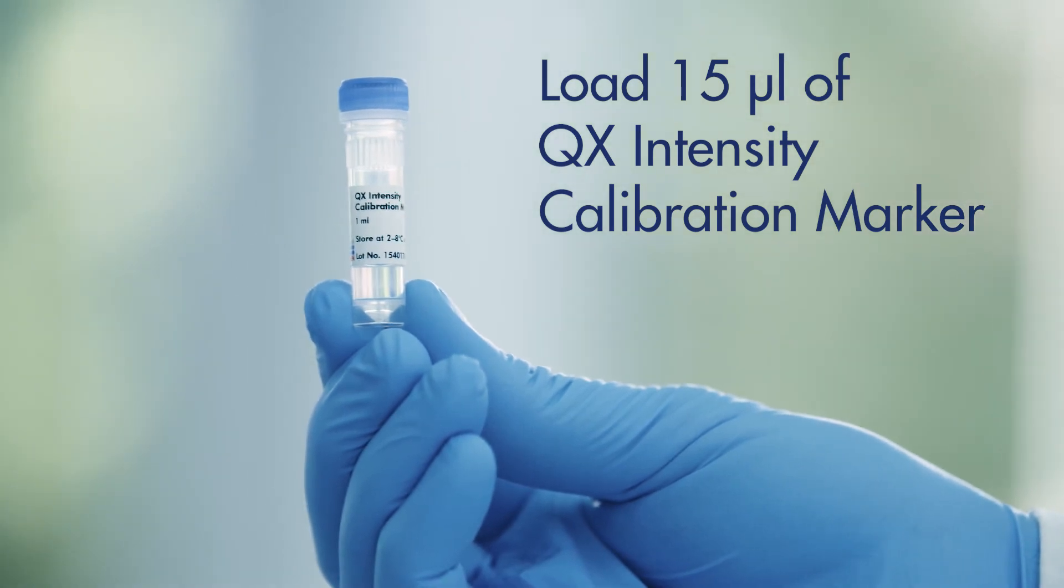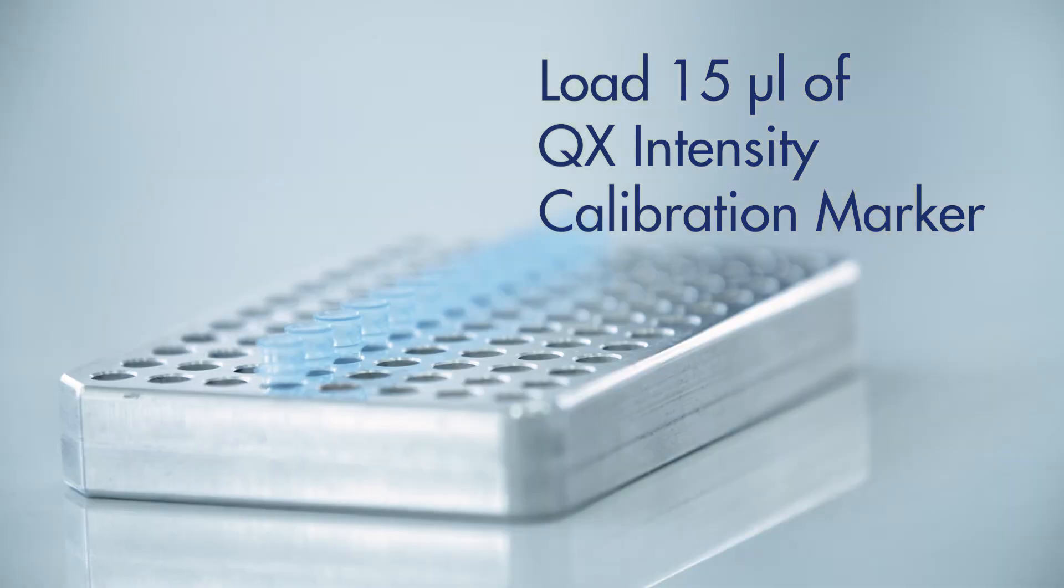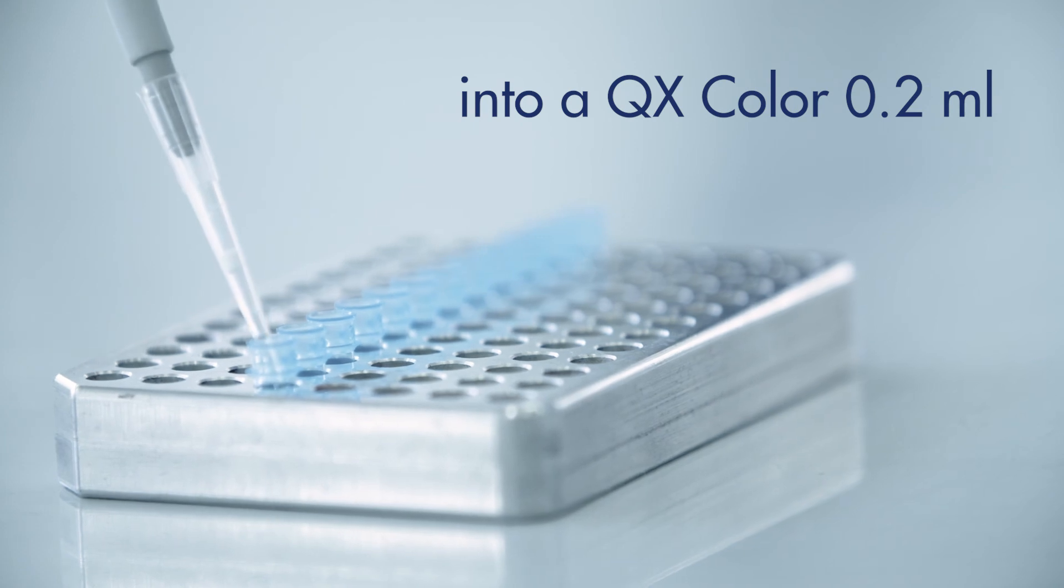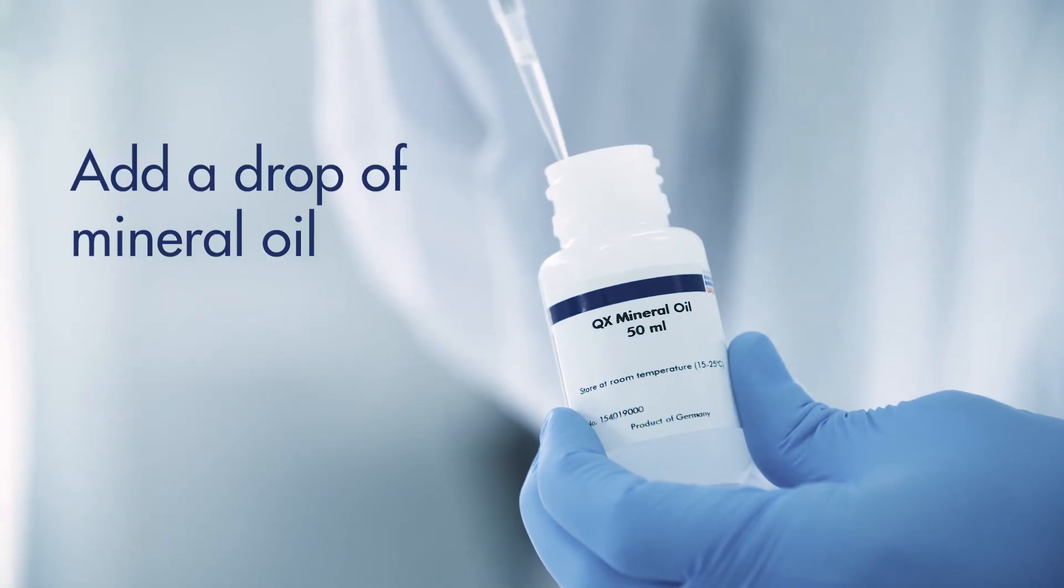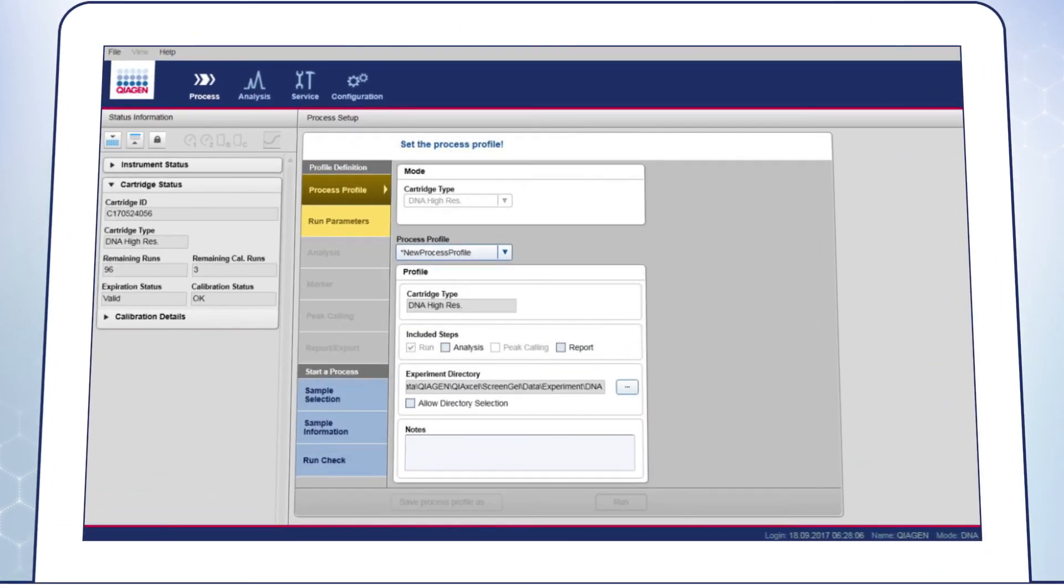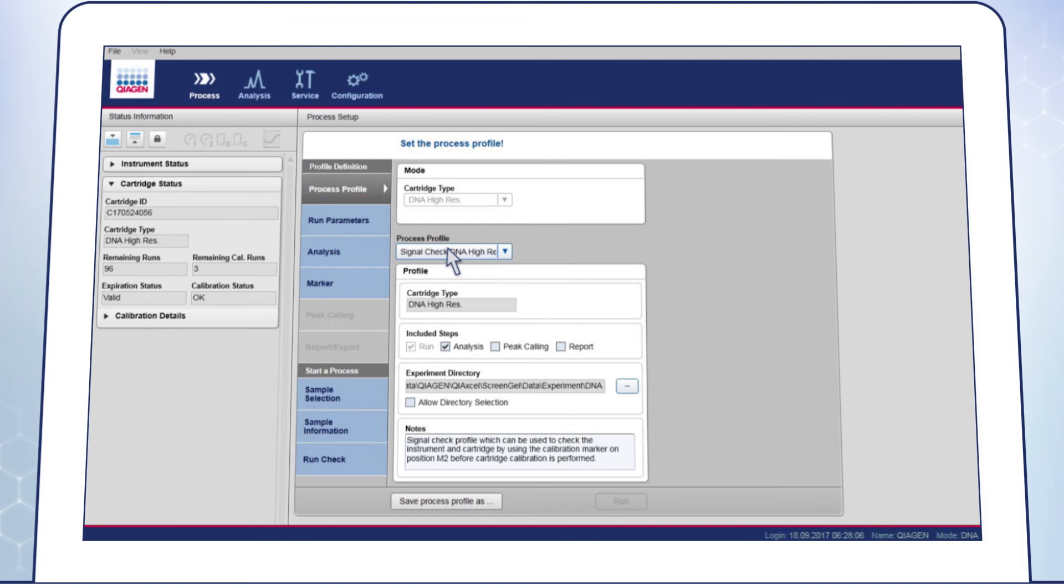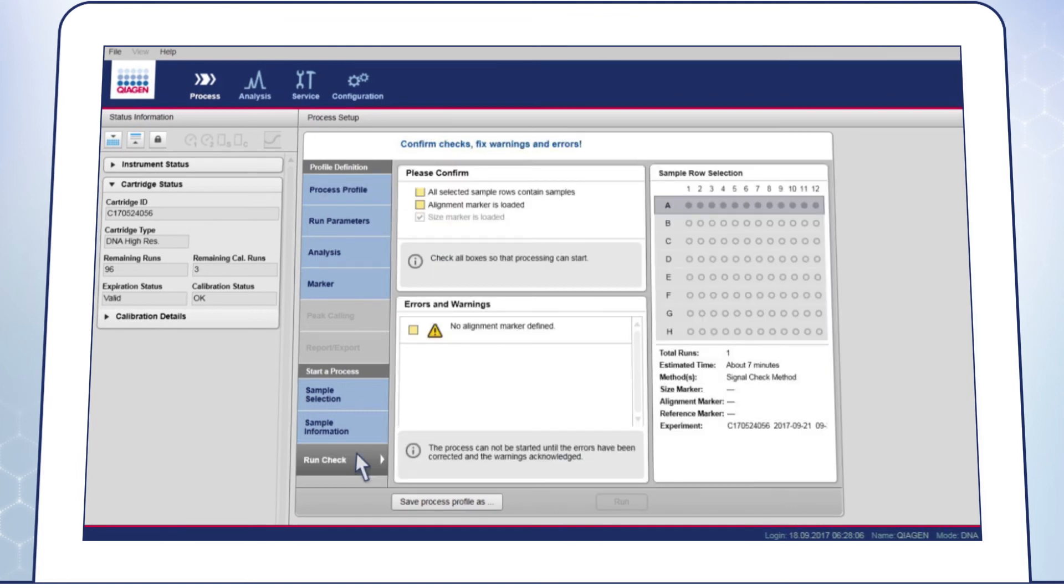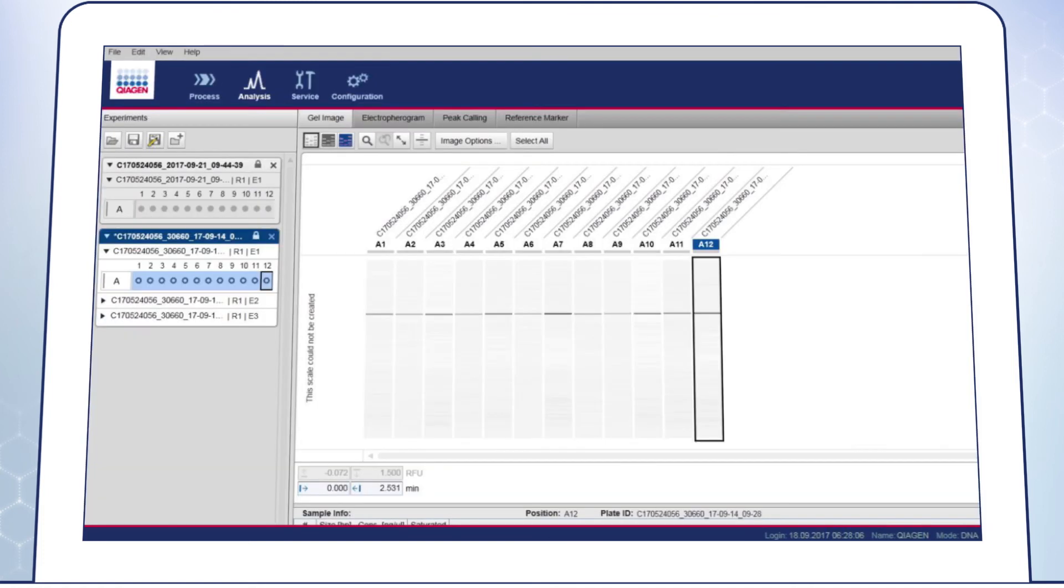For signal check, load 15 microliters of QX Intensity Calibration Marker into a QX 0.2 milliliter 12 tube strip. Add a drop of mineral oil and insert the strip into the marker 2 position of the buffer tray. Go to the Process Environment. Under the Process Profile tab, select the cartridge type and the default signal check process profile. Go to the Run Check screen, enter the required information and click on Start Run. If a single peak is detected in all channels, the intensity calibration can be performed again. If one or more channels failed to detect a peak or if there is no band or several bands present, please contact Qiagen Technical Services.